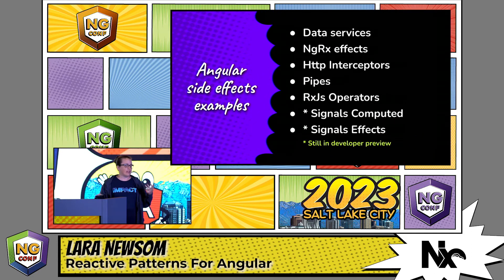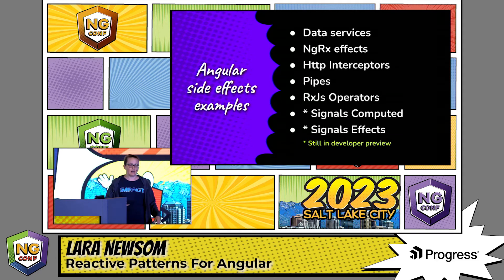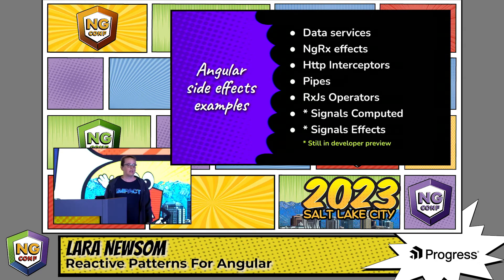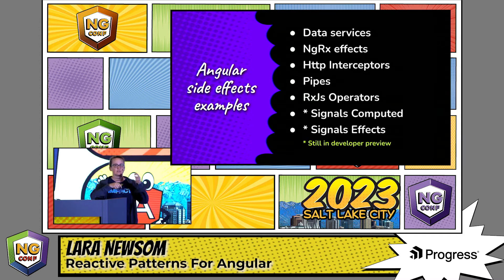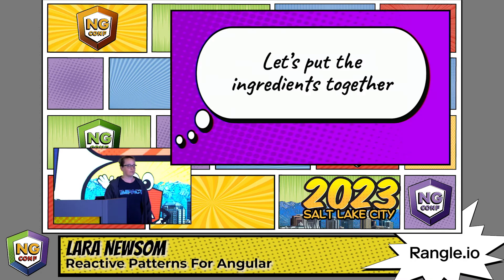For Angular, we have a lot of things that can do side effects for us, including RxJS operators, pipes, and interceptors. Signals' computed and signals' effects will take the produced value from signals, do work to them, and produce new signals. Let's put these ingredients together.